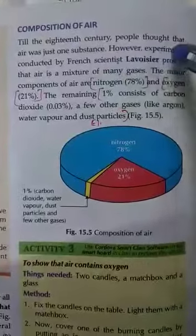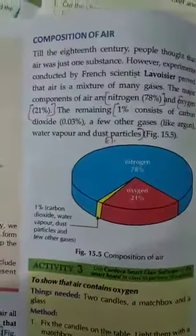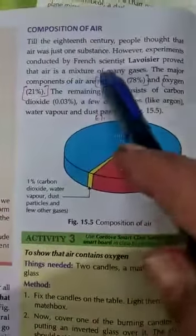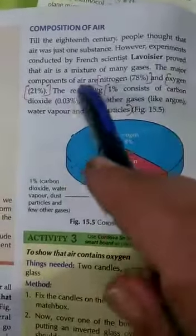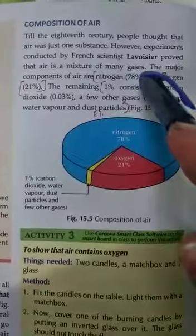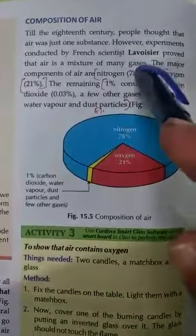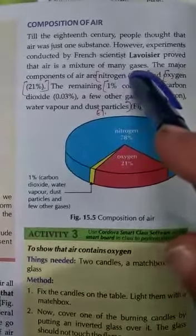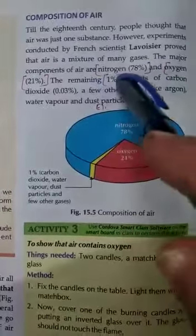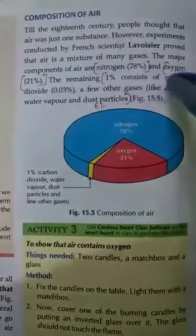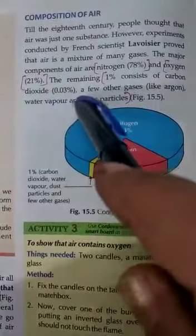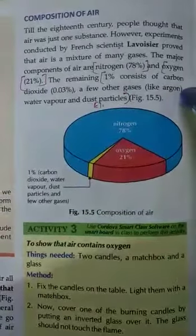Next is the composition of air. Till the 18th century, people thought that air was just one substance. However, experiments conducted by French scientist Lavoisier proved that air is a mixture of many gases. The major components of air are nitrogen 78%, oxygen 21%, and the remaining 1% consists of carbon dioxide 0.03%, and a few other gases like argon, helium, etc.